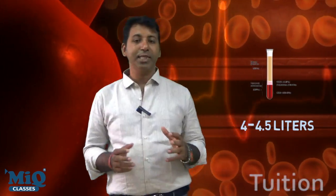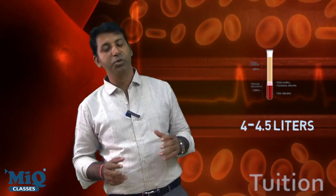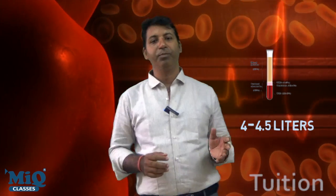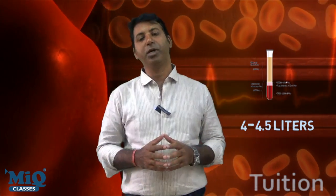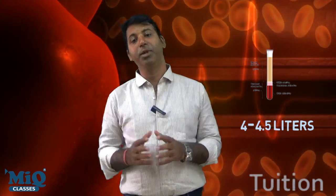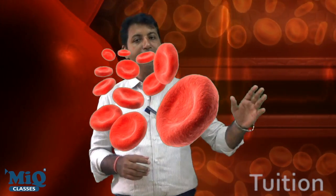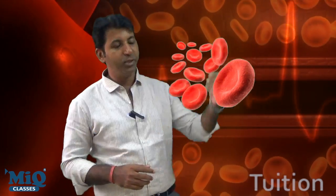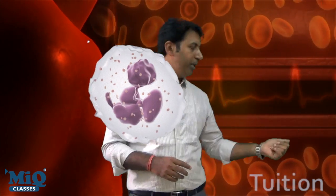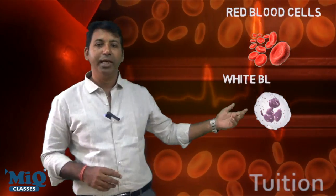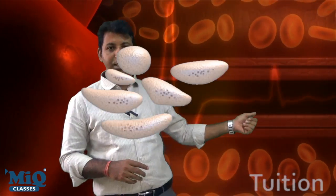Out of that, more than 60 percent goes to the plasma, and the remaining 40 percent goes to the blood cells — blood corpuscles, as they are called. There are three different types of cells: one is RBC, another is WBC, and the third is platelets.